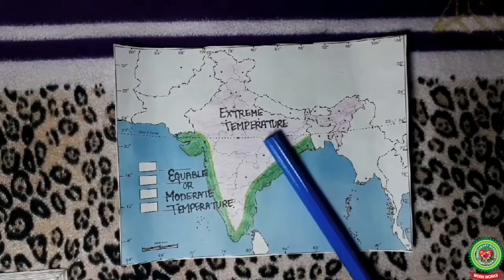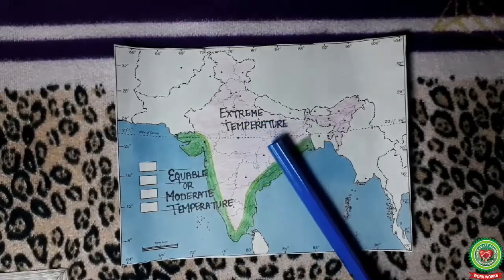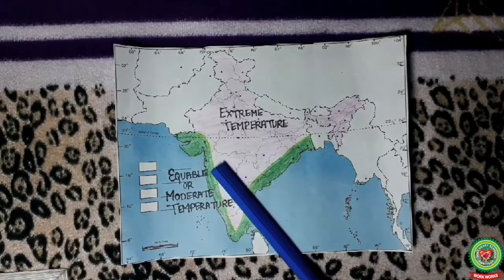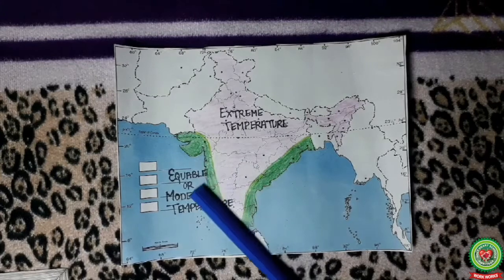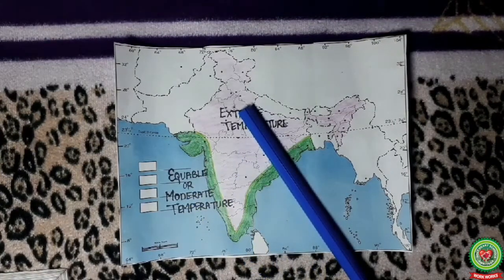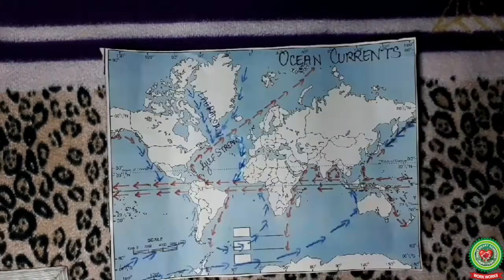We can take two examples: Mumbai, near the sea coast, enjoys equitable climate, whereas Delhi, which is in the interior part of the country, experiences extreme climate. The next factor that controls temperature is ocean current.